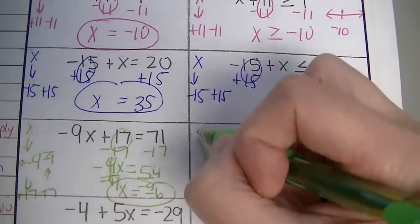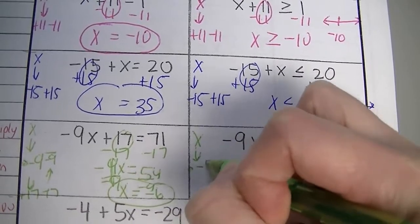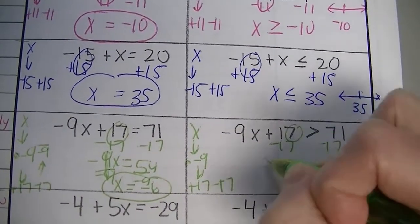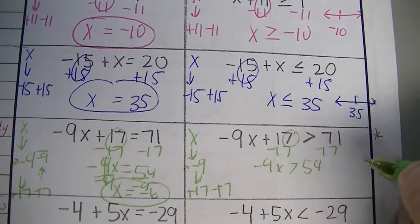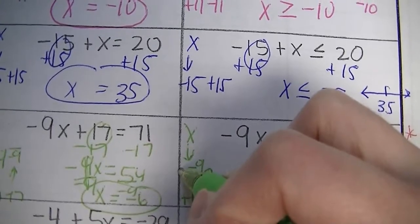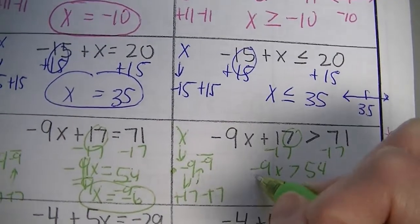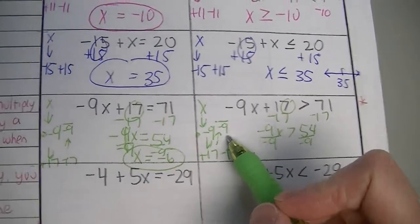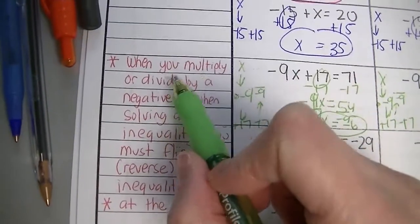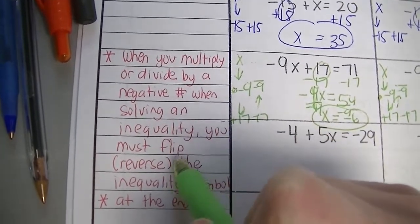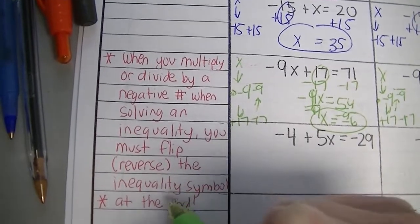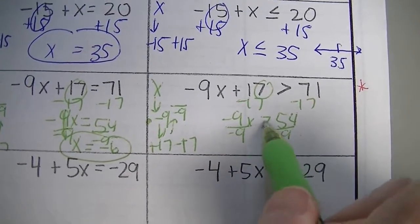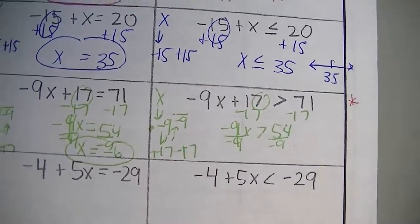Same thing on the inequality side — build it and unbuild it the exact same way. Go back up. The inverse operation of multiplying by negative 9 is to divide by negative 9, and you do that to both sides. Here's something important — notice I divided by a negative number. Read this and write it down: when you multiply or divide by a negative number when solving an inequality, you must flip, or reverse, the inequality symbol at the end.